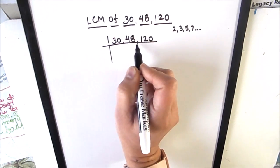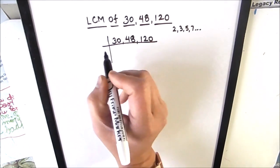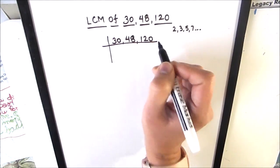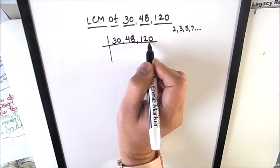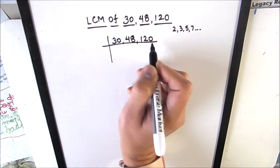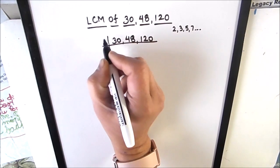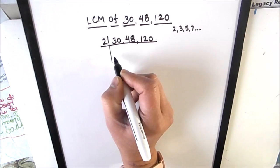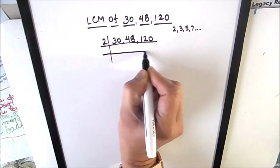So let's use these prime numbers to divide 30, 48, and 120. We will be dividing all three numbers together using a single ladder — this is called the ladder method. Here we write the numbers and divide them. Since all three numbers are even, we are going to use the first prime number, 2, because all even numbers are divisible by 2.